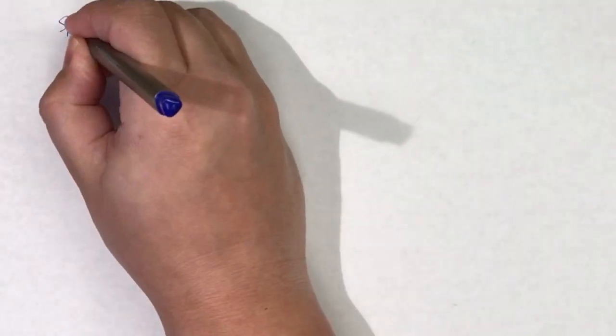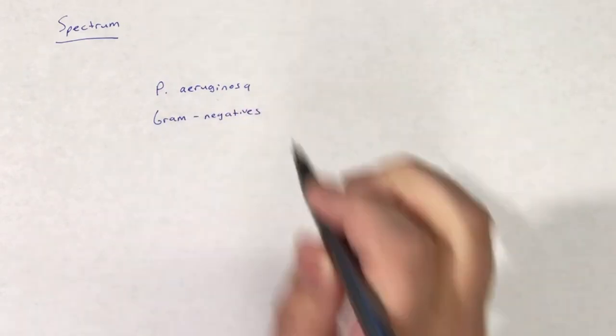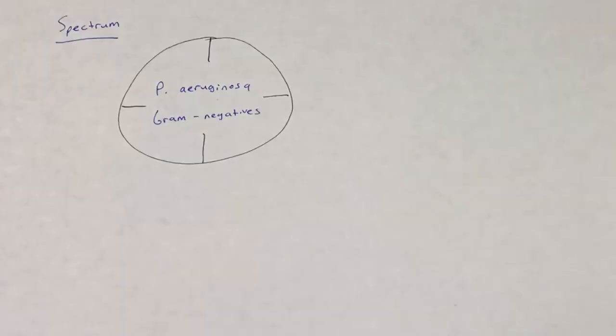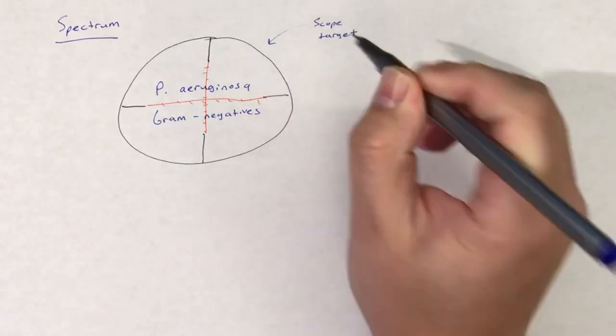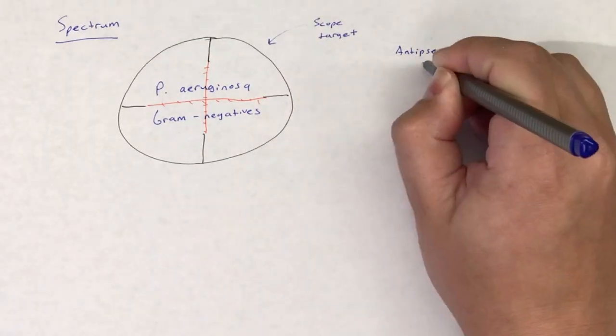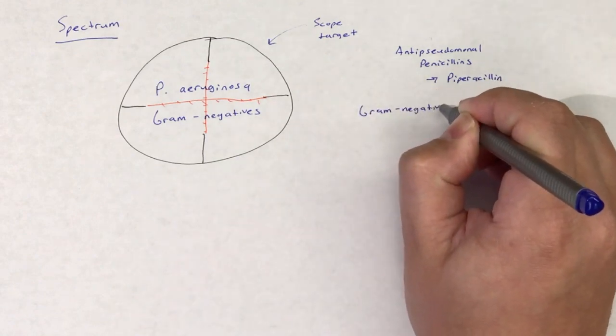The main aim in the creation of anti-pseudomonal penicillins was to make a penicillin that would cover P. aeruginosa. Targeting P. aeruginosa is difficult because it is resistant to many different antibiotics. Another goal was to expand penicillin gram-negative coverage.